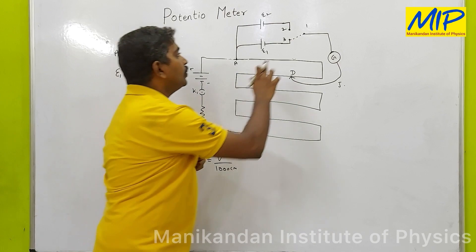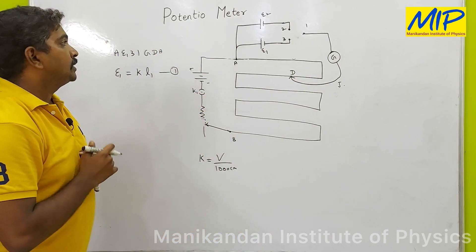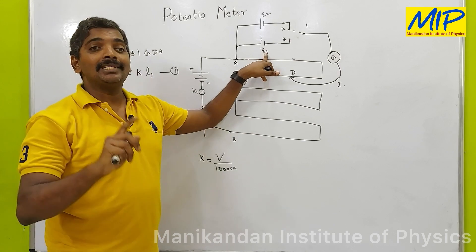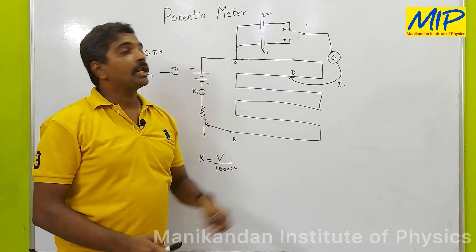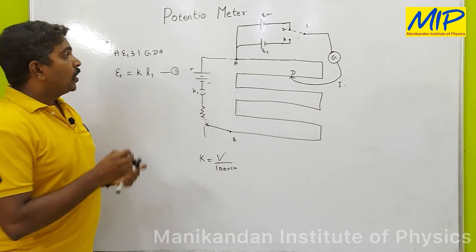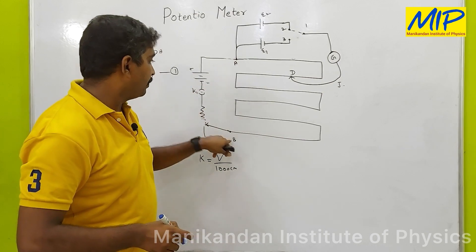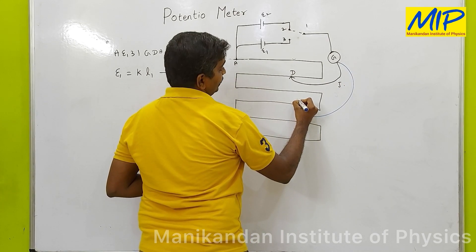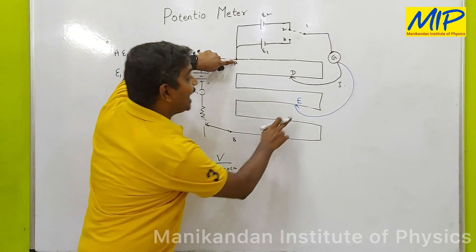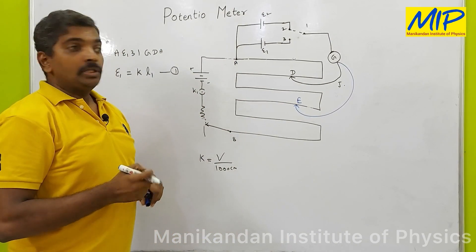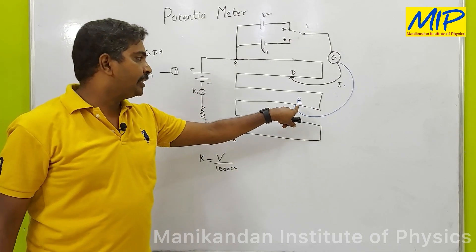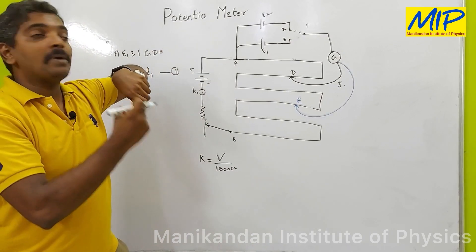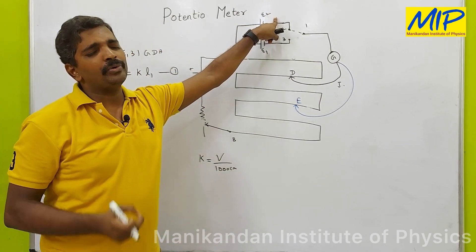For the next case, I open the previous connection and connect points 2 and 1, so now E2 is connected with the galvanometer and E1 is disconnected. I slide the jockey between A and B and get the balancing length somewhere at point E. The length from A to E is L2.